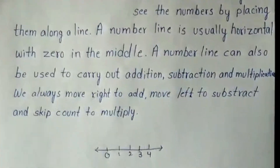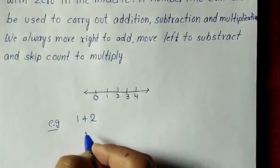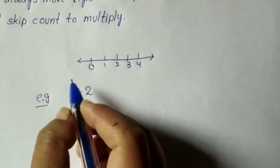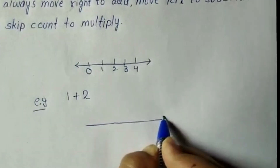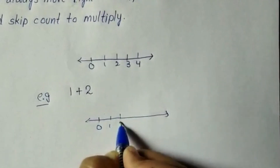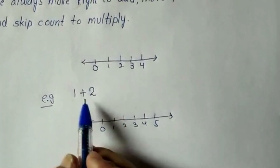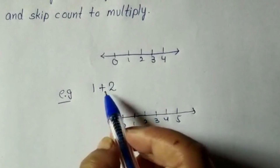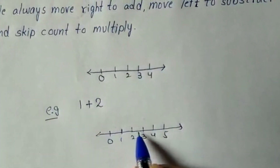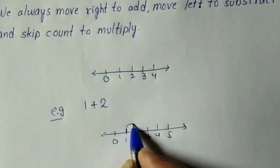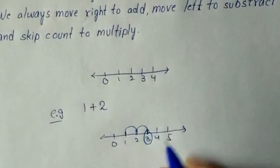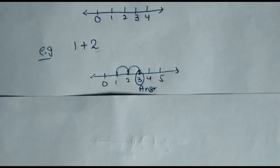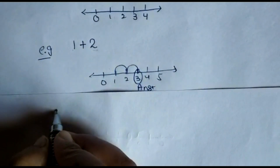Let's understand addition on a number line with an example: 1 + 2. Everyone knows 1 + 2 = 3, but how do we show this on a number line? First we make a number line: 0, 1, 2, 3. We start at 1, then since we are adding we move right — 2 steps to the right — and we reach 3. So the answer using the number line is 3.